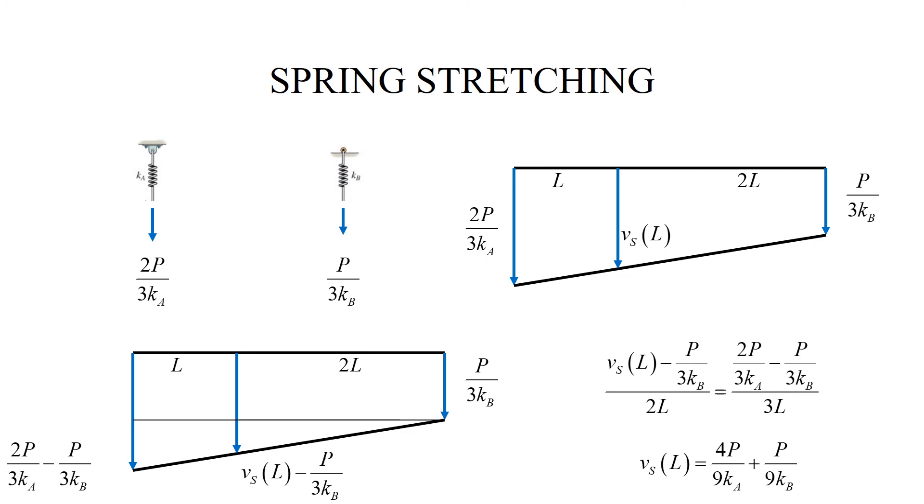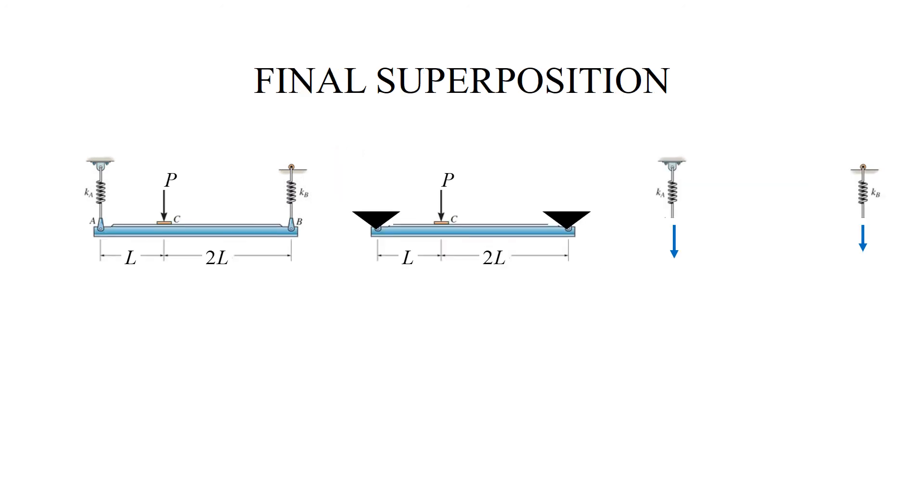Now I can put it all together. So I have the displacement due to bending that came from the analysis of the simply supported beam based on the superposition table. Then I have the displacement due to the compliance of the springs, and that was done on the previous slide. And now I simply say that the total deflection is the sum of VB and VS, and here is the answer.